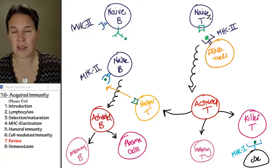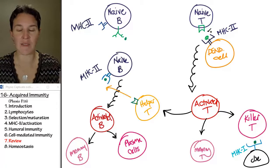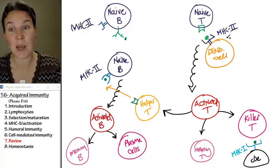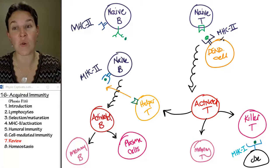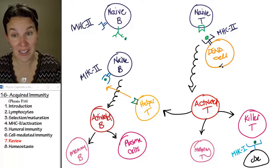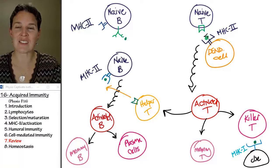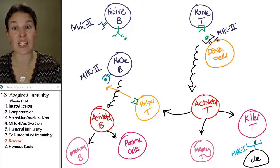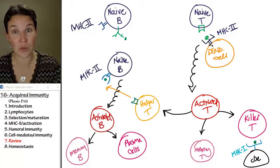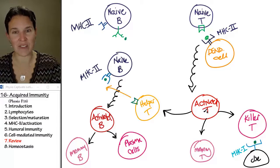Meanwhile, the naive T cell doesn't have anything to do with its antigen except it binds to the MHC II platform of a dendritic cell that's holding its antigen. The naive T cell binds to the antigen and the MHC II, and that initiates activation.